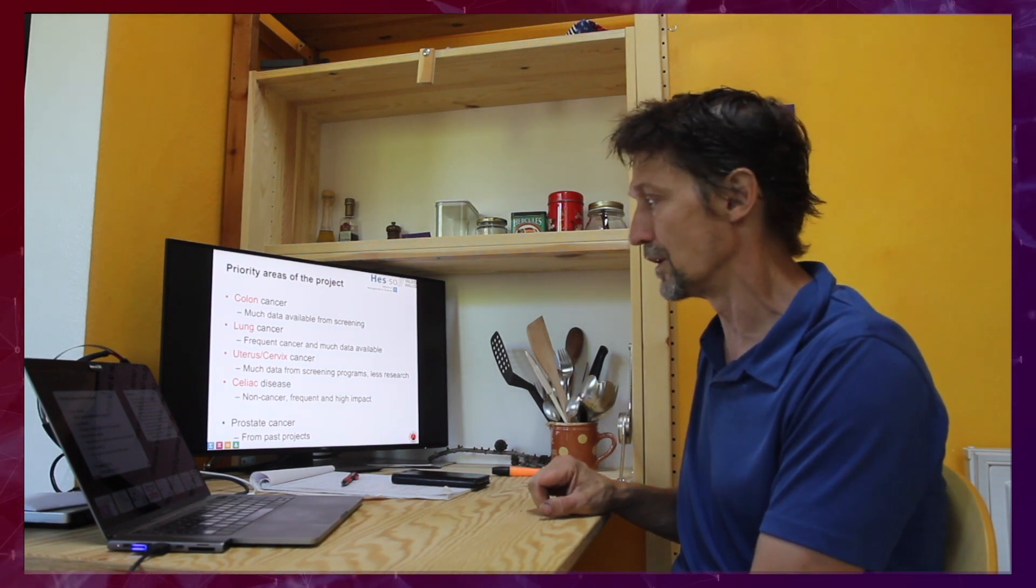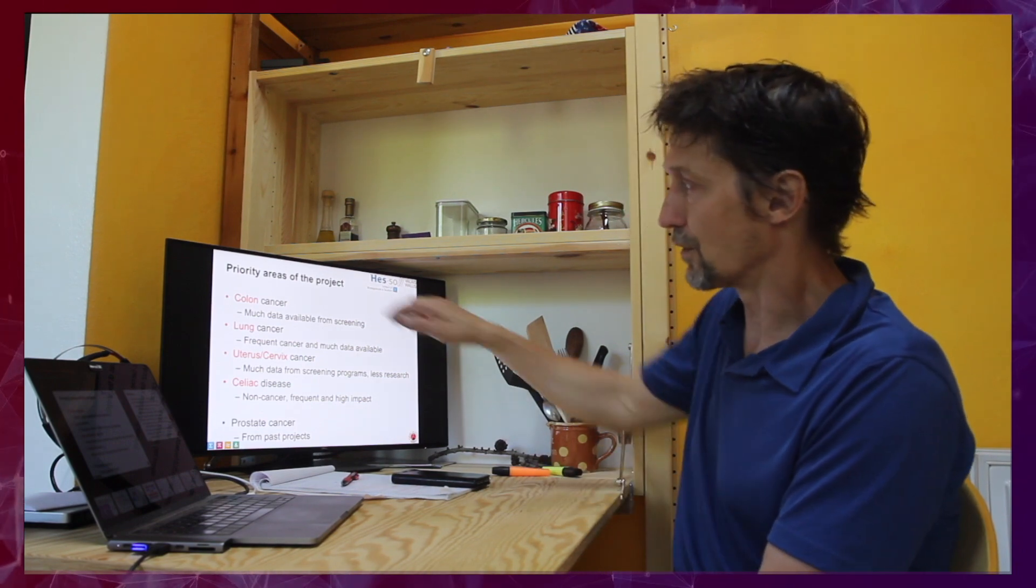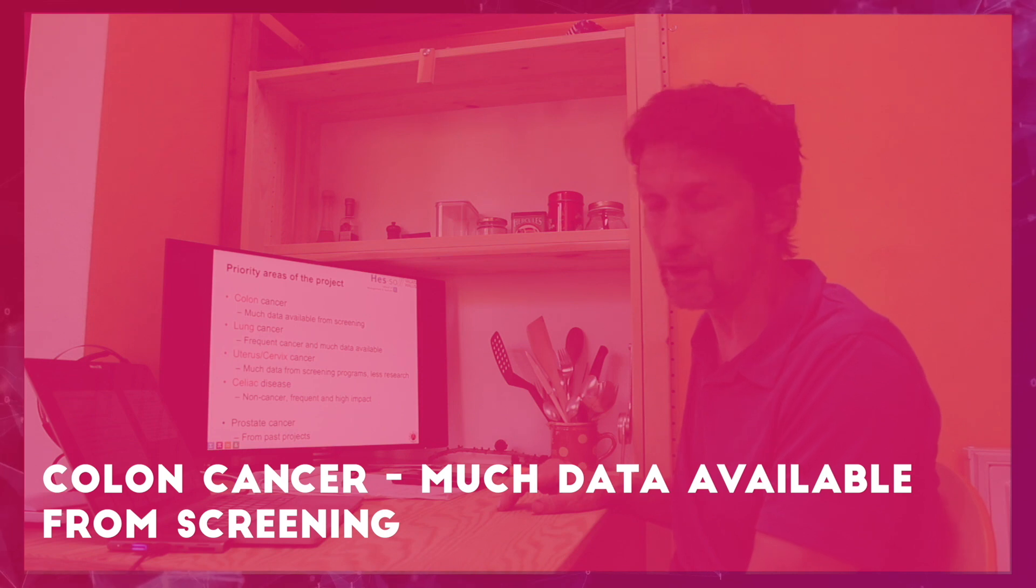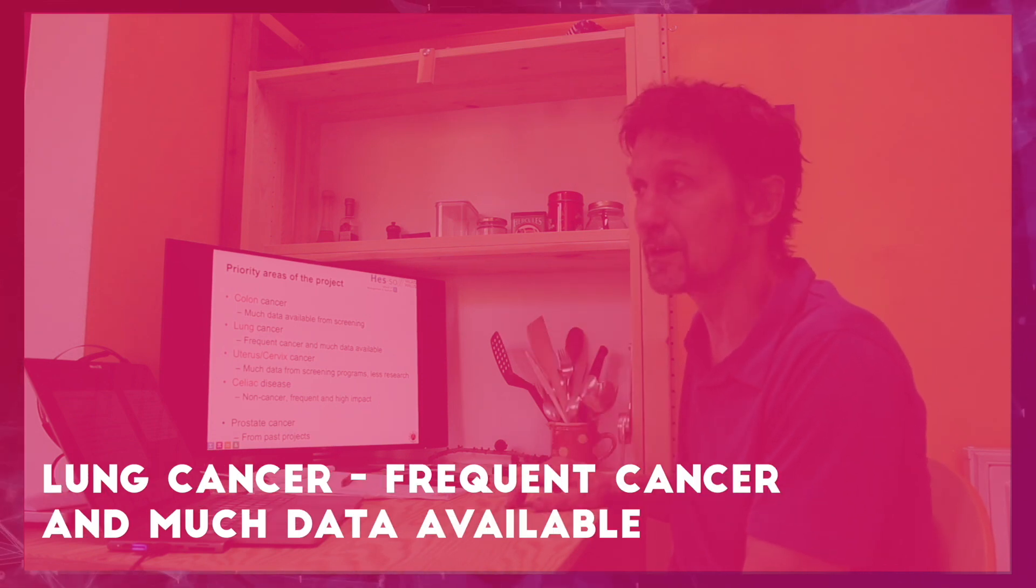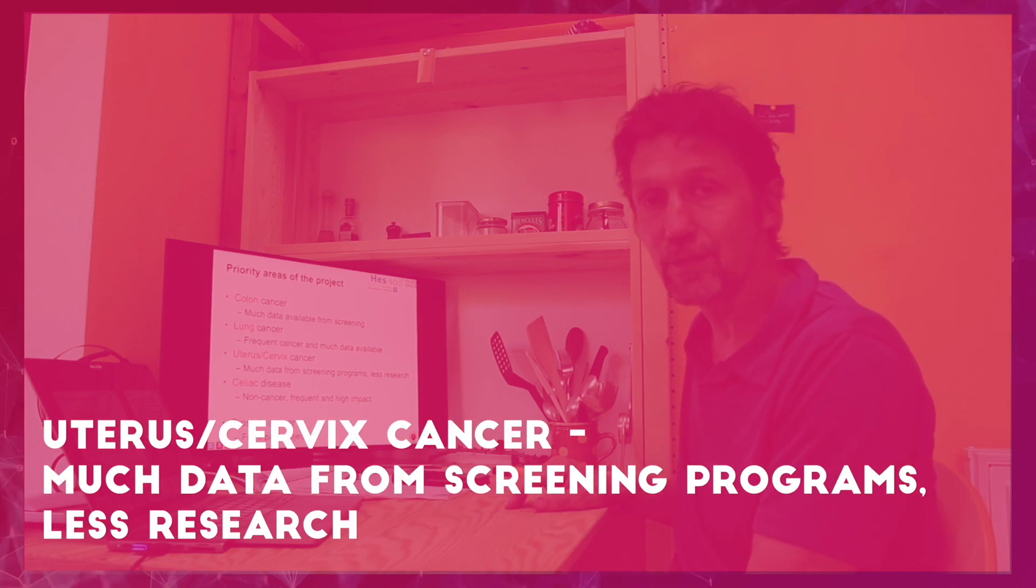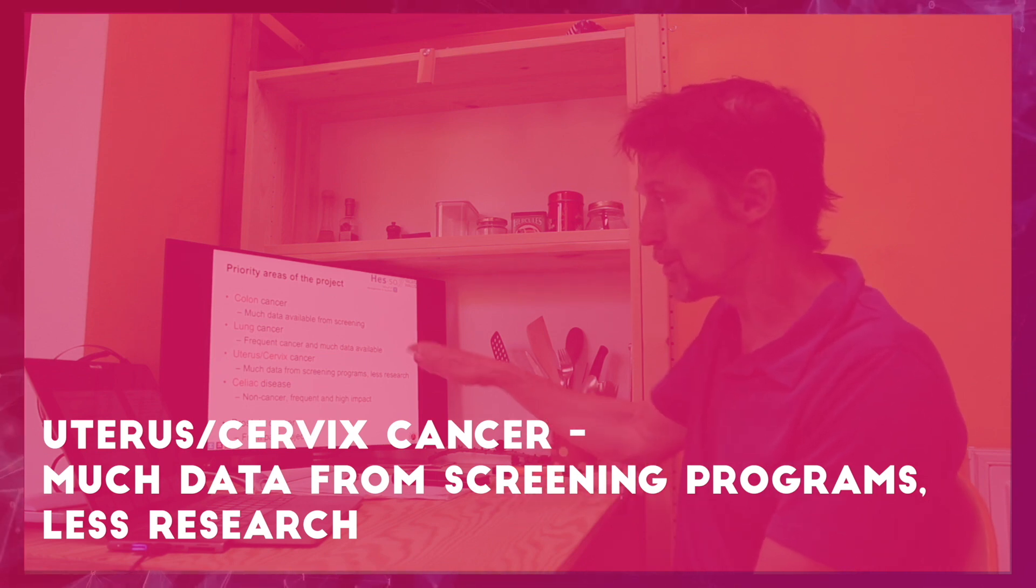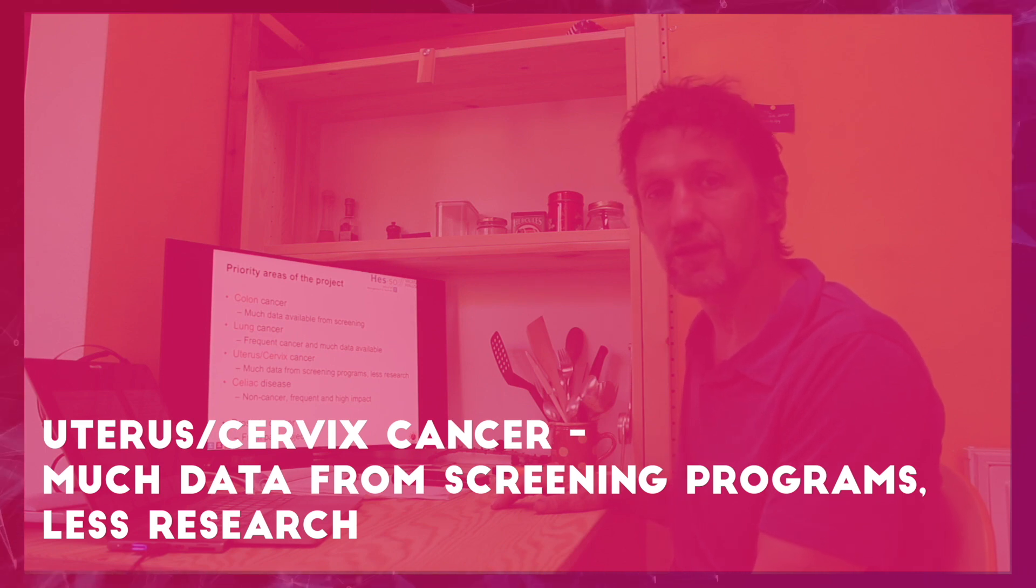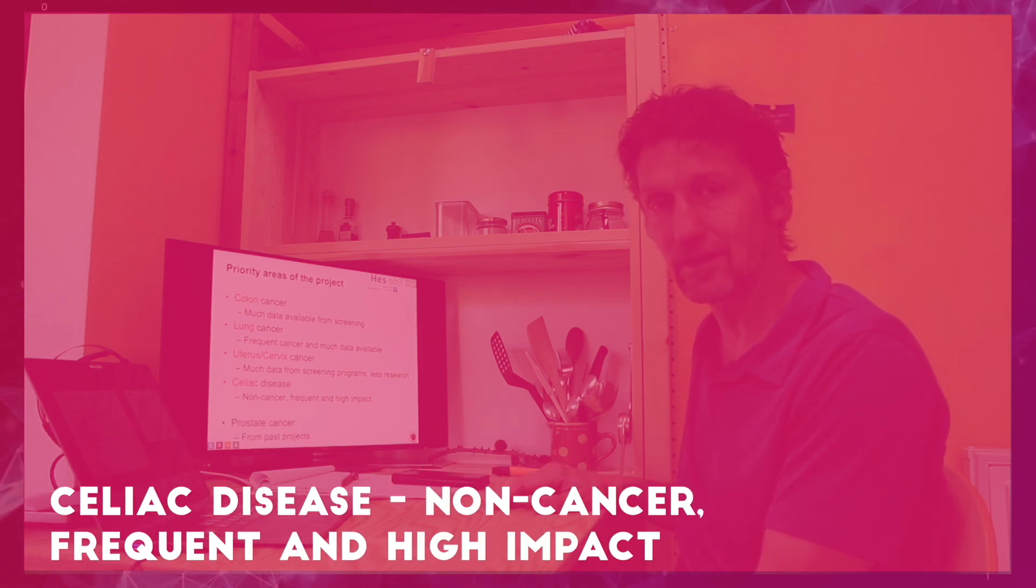We have in the project we had to choose which domains to go more in depth. And we have in the past worked much on prostate cancer, but it's also a domain where many tools already exist, commercial tools are available. So we decided to go for colon cancer. It's a frequent disease, there's much screening data available. We're going for lung cancer, same thing, there's much data, much screening available, uterus, cervix, again, a relatively frequent domain, but there's much less research done compared to prostate breast cancer, for example. And then we wanted to have one area in histopathology that is not linked to cancer. So we choose celiac disease, which again is something that has been increasing over the last 20 years, and that causes a lot of work on the histopathology departments. So these are the areas that we choose to work on.